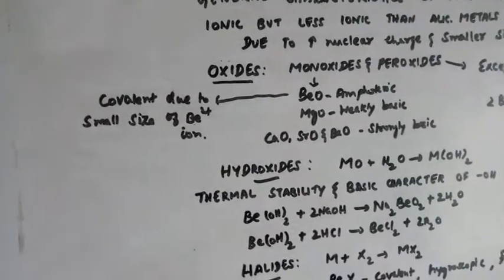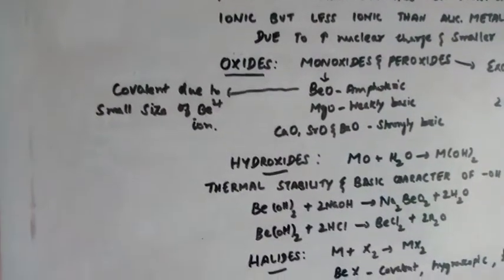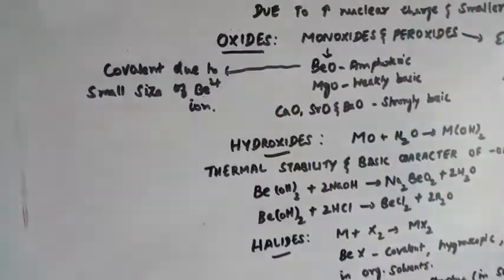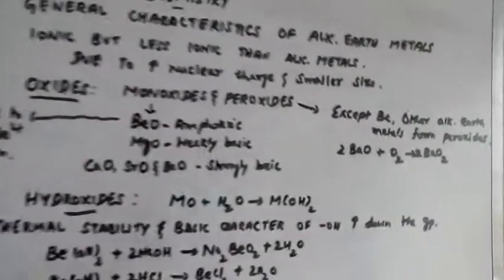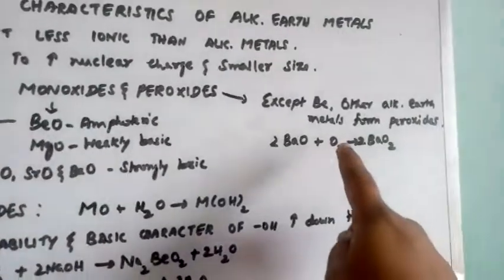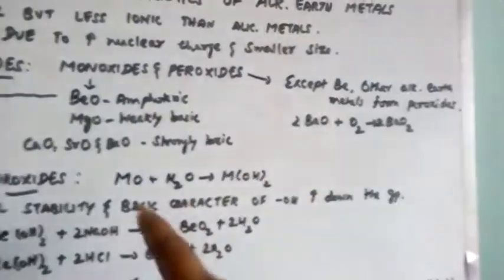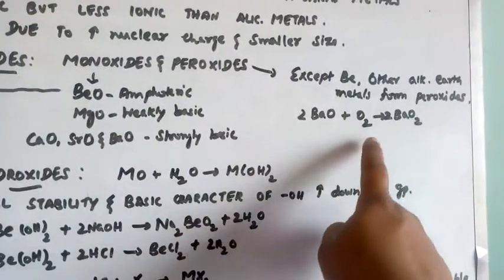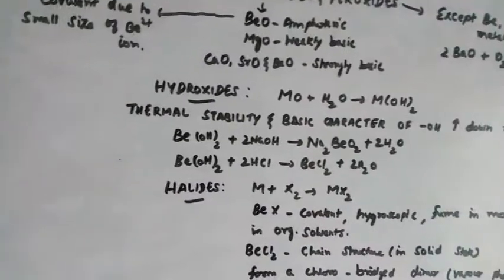Beryllium oxide is covalent in nature due to the small size of the beryllium ion. Except beryllium, other alkaline earth metals form peroxides. For example, barium oxide, once heated with oxygen, gives barium peroxide.